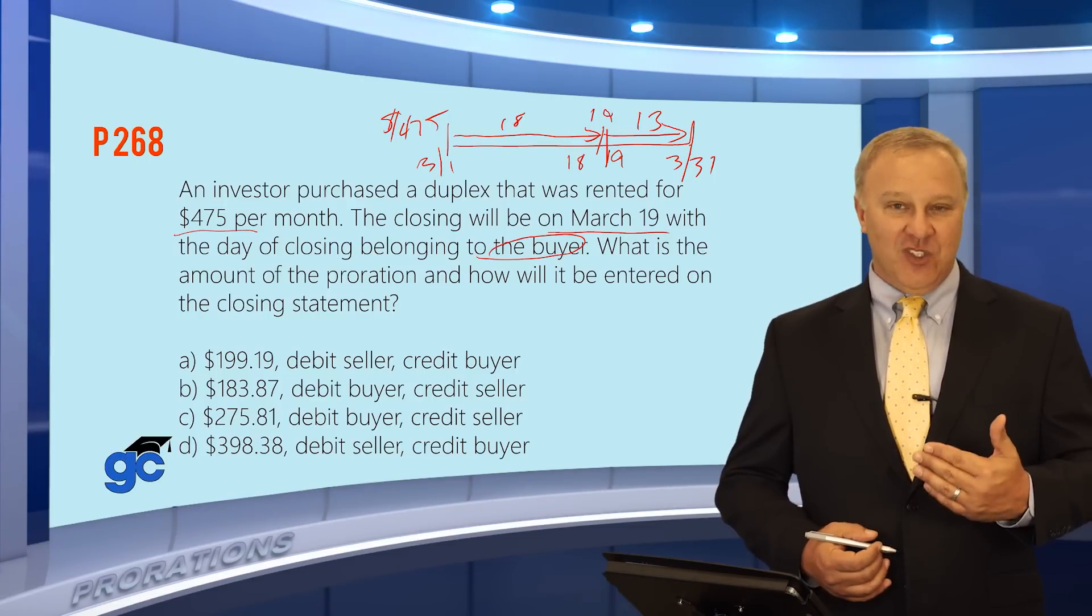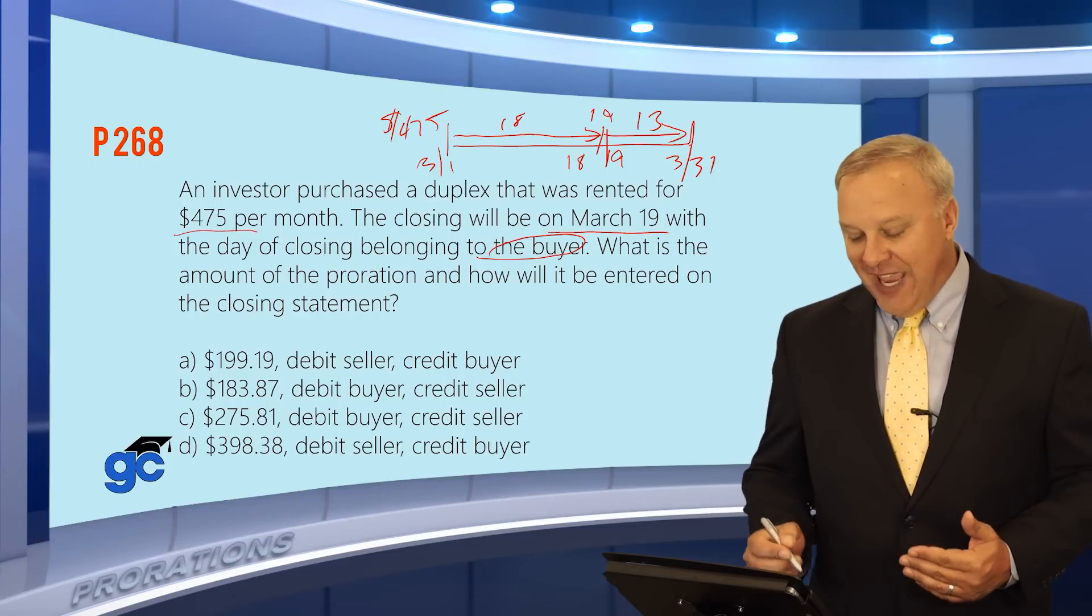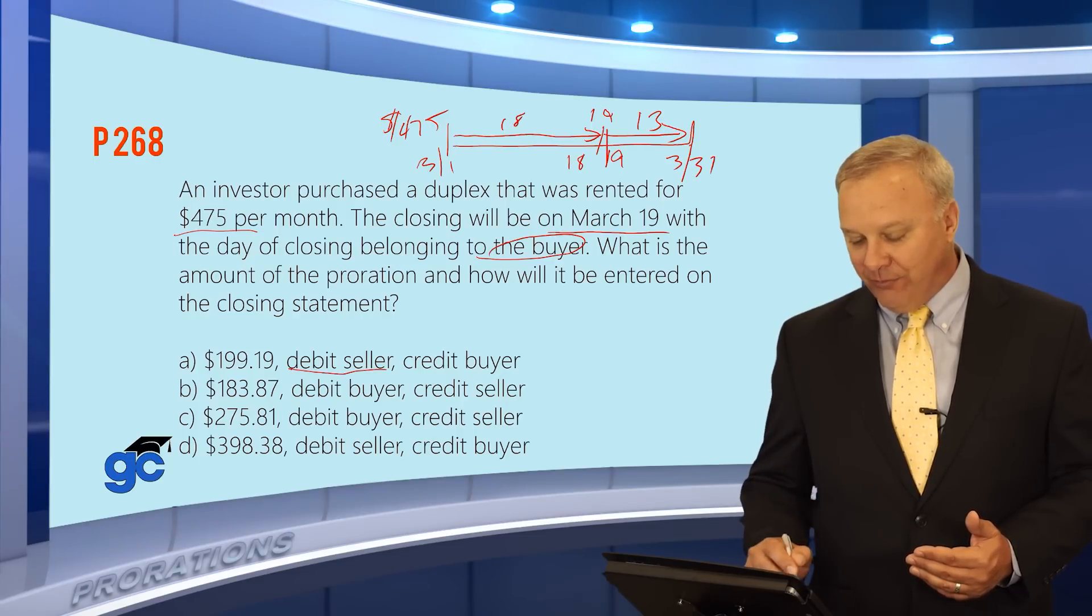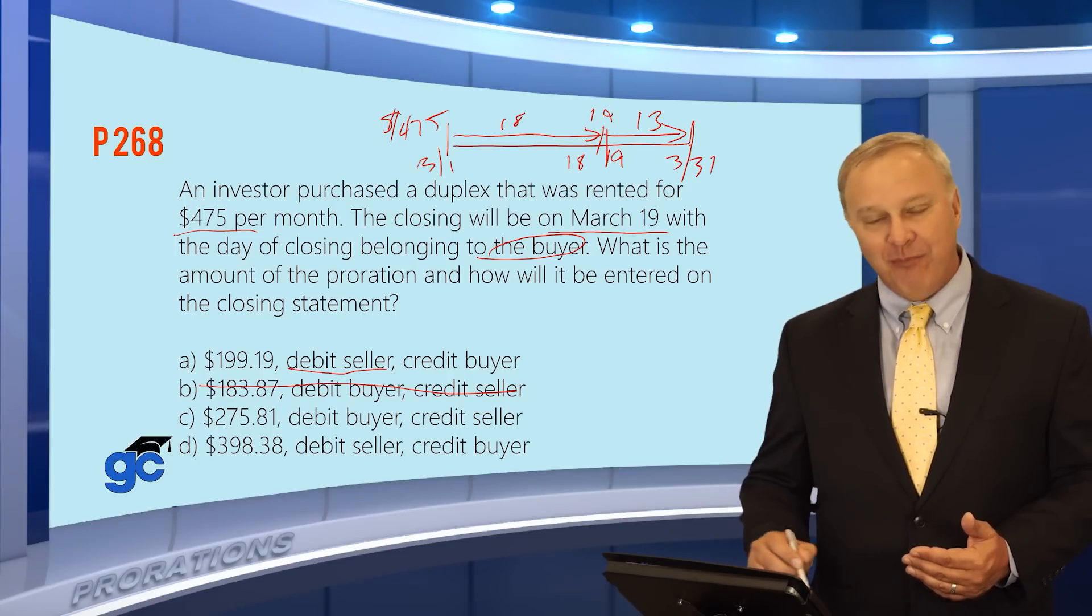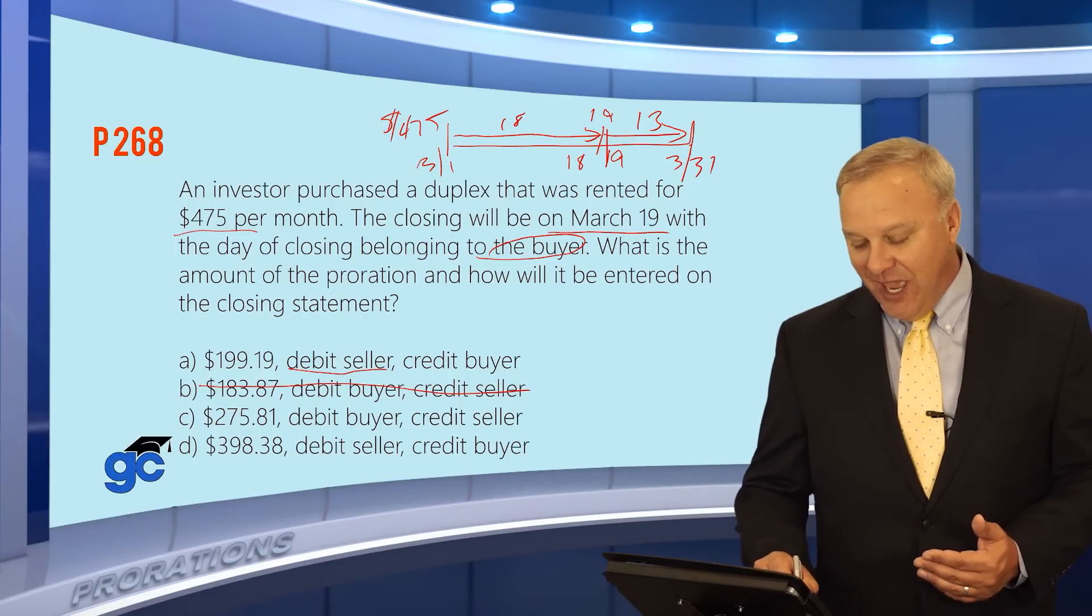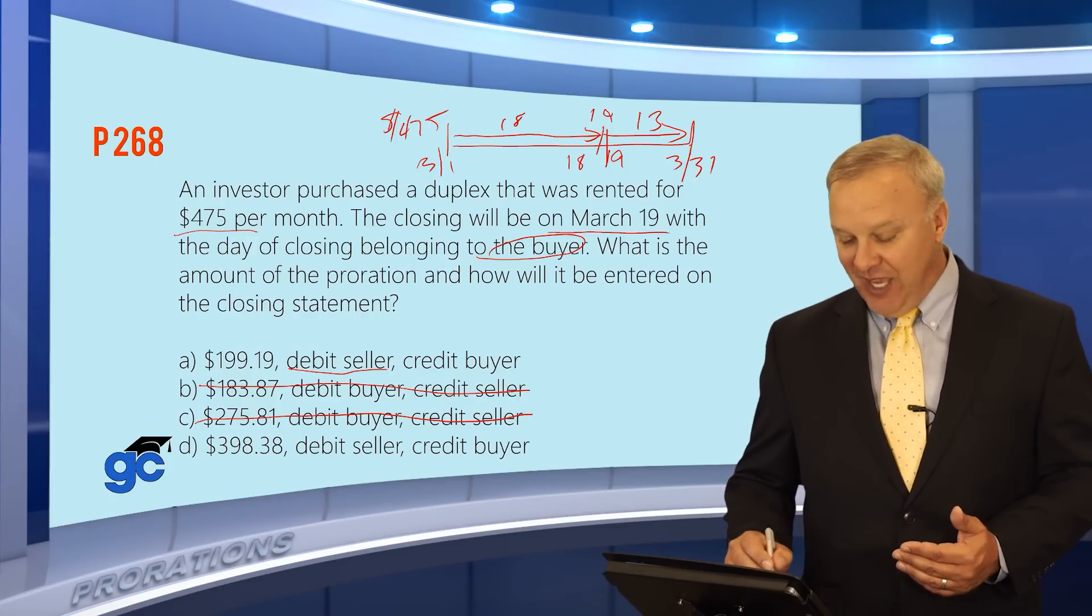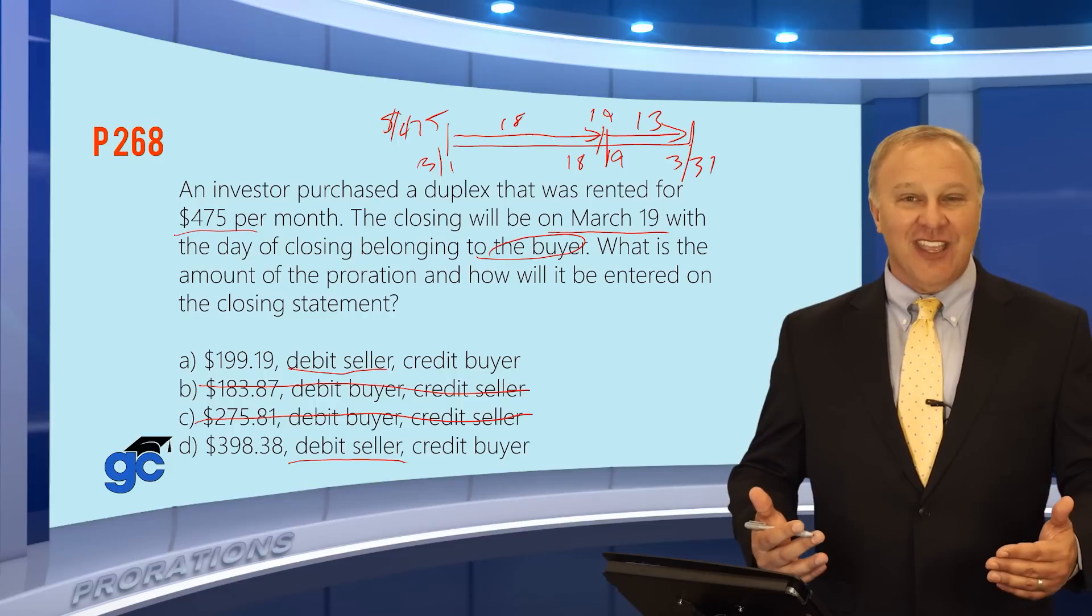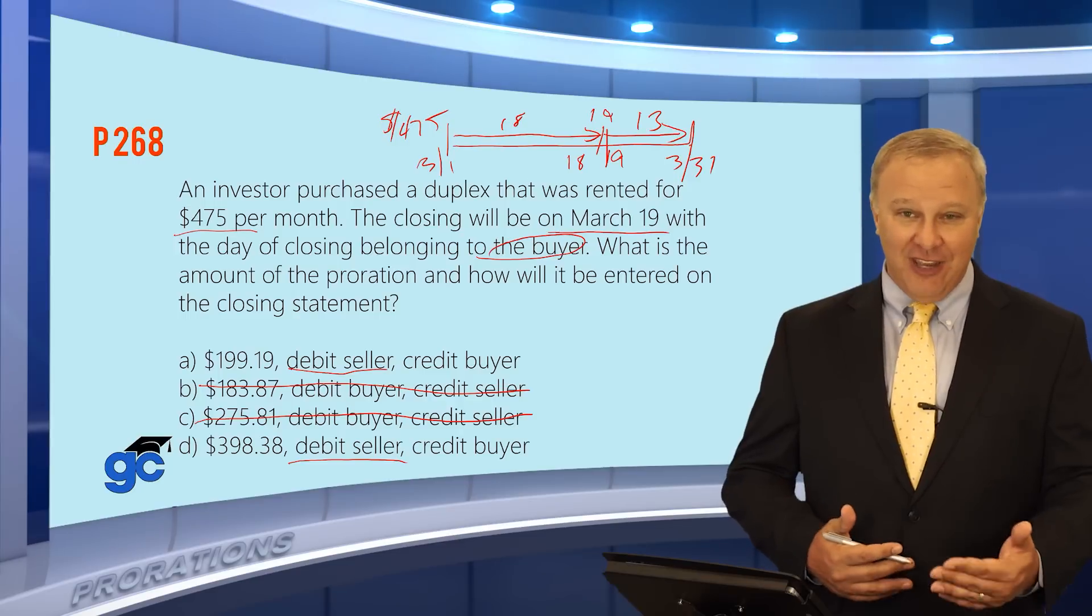So when we look at it, the seller will be debited, the buyer will be credited. Well, if you just look at these answers, answer A says debit seller, so that could be possible. Answer B says debit buyer, so that is impossible, cannot pick that. Answer C says debit buyer, that can't be correct. And answer D says debit seller, which again, could be correct. So if you're just guessing at this, you're going to either guess A or D, just by knowing who gets a debit, and who gets the credit.